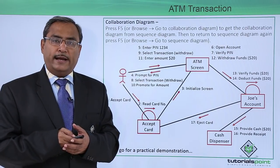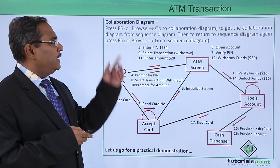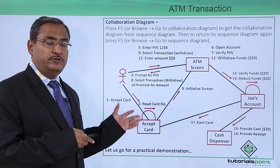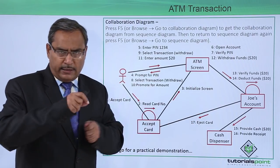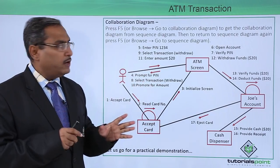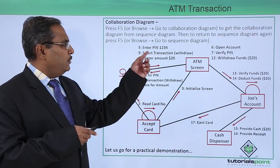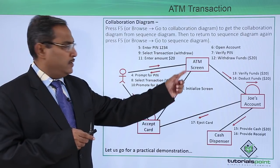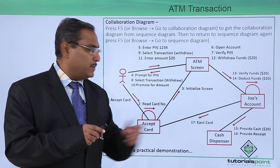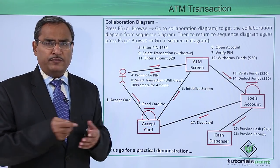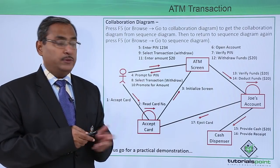This is the corresponding collaboration diagram. You can get it by pressing F5 or browsing to the collaboration diagram option in the menu. We drew the sequence diagram, pressed F5, and the collaboration diagram was formed. We then dragged the nodes so that messages could be sent without any overlapping or crossover of arcs. In the collaboration diagram, the messages are shown with numbers indicating their sequence.